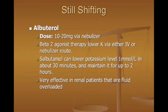You can also give albuterol at large doses — 10 to 20 milligrams via nebulizer. This beta-2 agonism speeds up the Krebs cycle and lowers potassium very effectively. Salbutamol can lower potassium one millimole per liter in about 30 minutes and maintain that level for up to two hours. Be careful not to lower potassium too quickly if the patient is not a dire emergency. It works especially well in renal failure or fluid-overloaded patients.